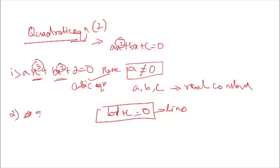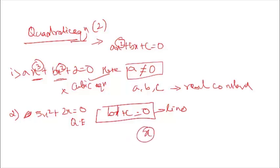However, 5x² + 2x = 0 is a quadratic equation, since its highest power is 2. Hope you have understood the difference. Whenever you see an equation whose highest power is 2, you can say that it is a quadratic equation.